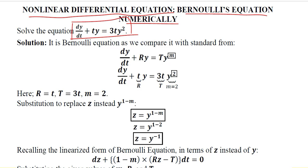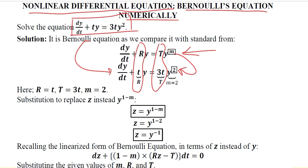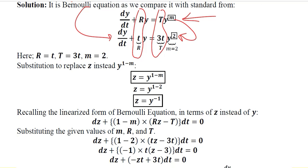Let's write the standard form of it. After writing the standard form, we can extract the value by comparing the given equation. The given equation is written here. R has a value of t, and capital T is equal to 3t, and m is equal to 2.